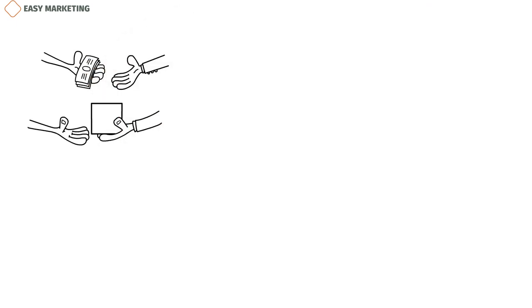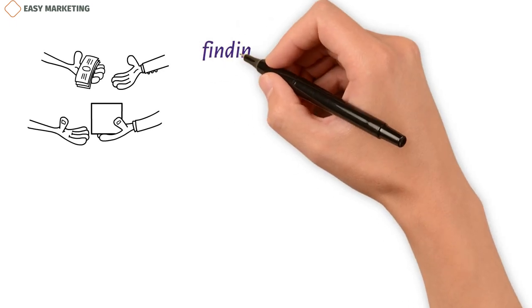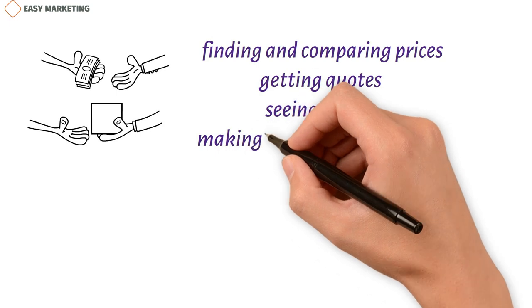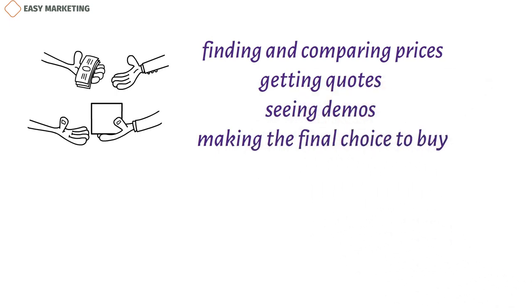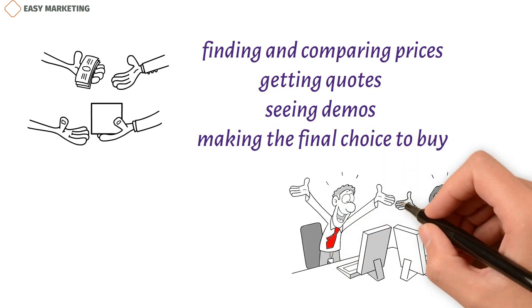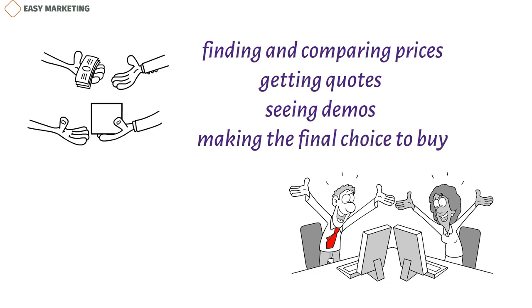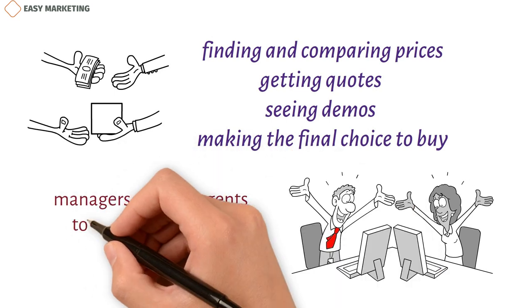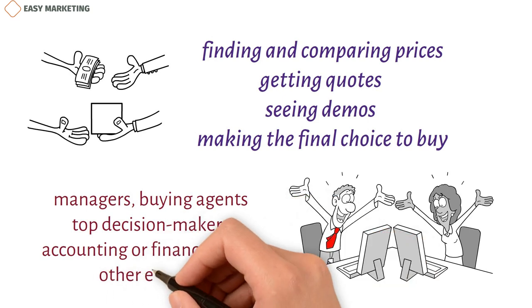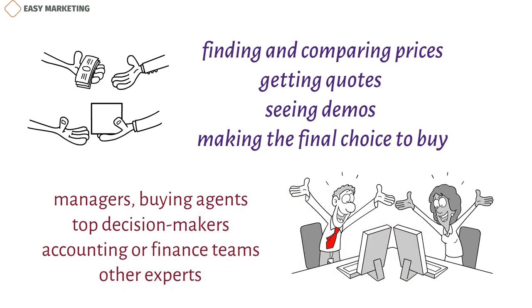Buying for a business can be a complicated task. The process includes finding and comparing prices, getting quotes, seeing demos, and making the final choice to buy. You may have to show your value to more than one level of decision-makers. Usually, the bigger the buy, the more levels you have to impress. Managers, buying agents, top decision-makers, accounting or finance teams, and other experts in the field are all part of the buying process.